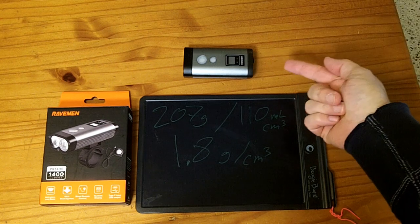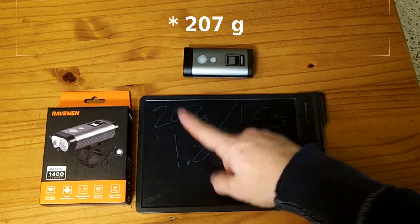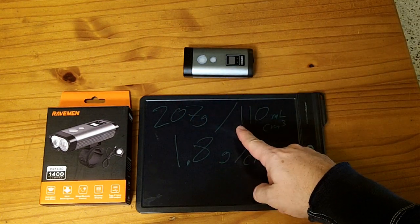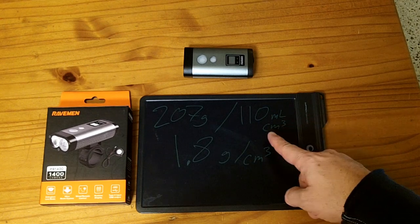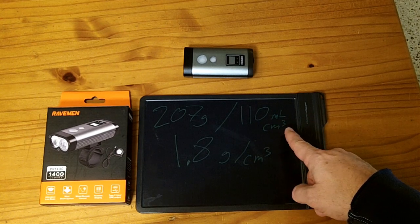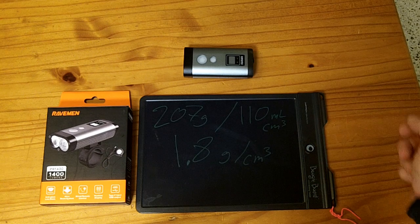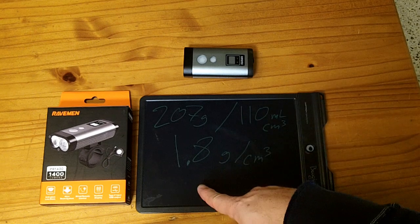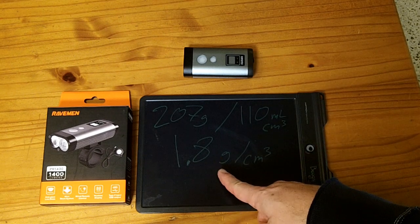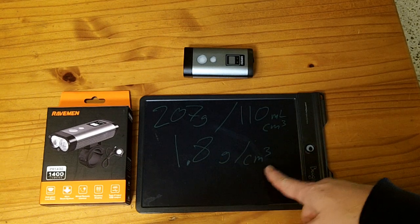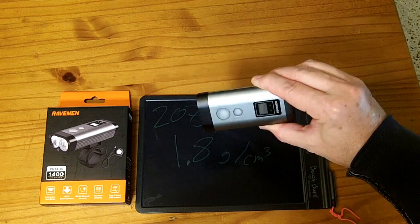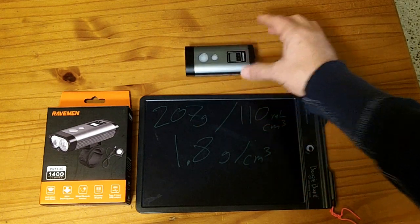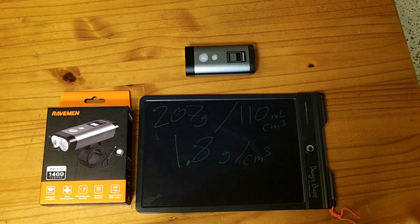This flashlight weighs 107 grams and displaces 110 milliliters of water, which is basically the same as 110 cubic centimeters of volume. So the density is 1.8 grams per cubic centimeter. That checks out because this object sank in water, meaning its density is higher than water's density of 1 gram per cubic centimeter.